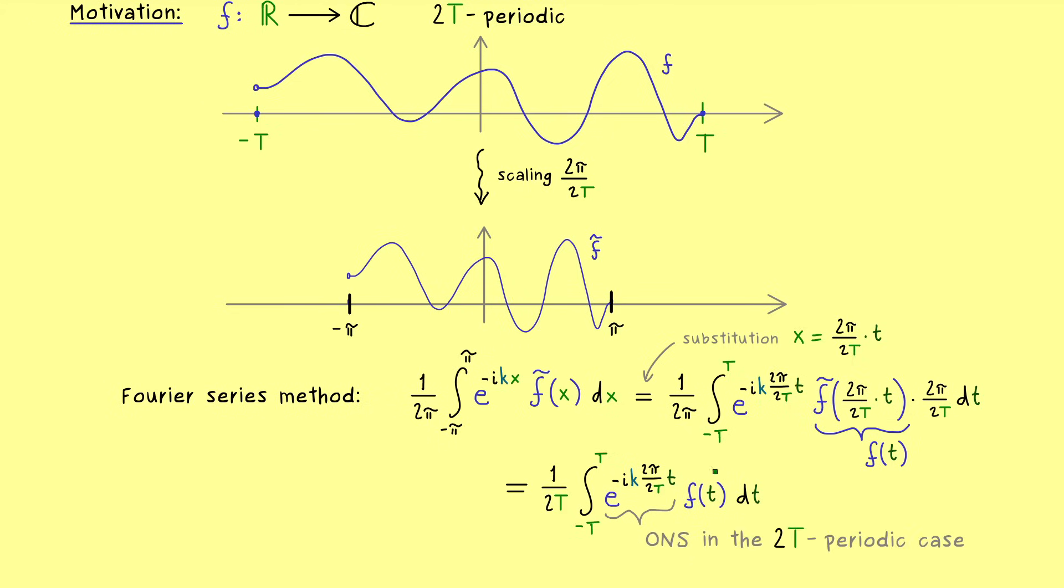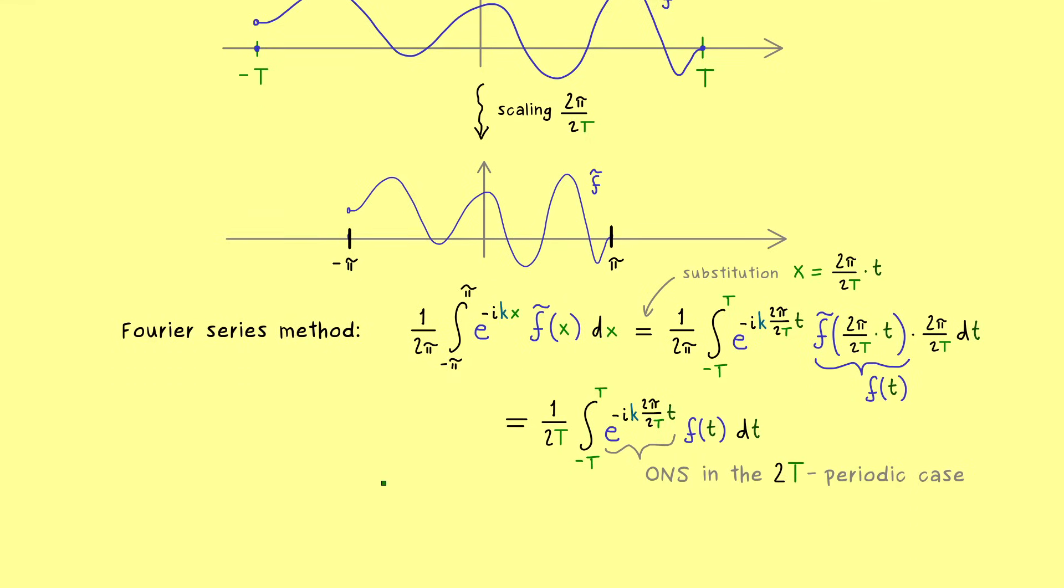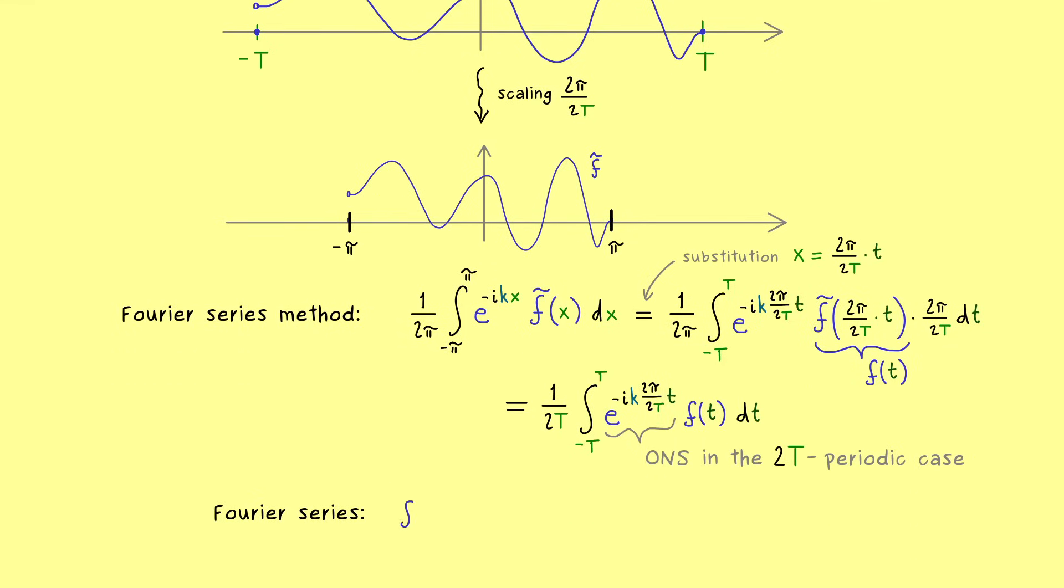Which means, if we consider square integrable functions, we can form the Fourier series and we know it converges. More precisely, we know it converges to the original function f with respect to the L^2 norm. So we can write f as an infinite series where we have our new ONS involved and also the Fourier coefficients. And there you know, the common notation we have for them is f hat of k.